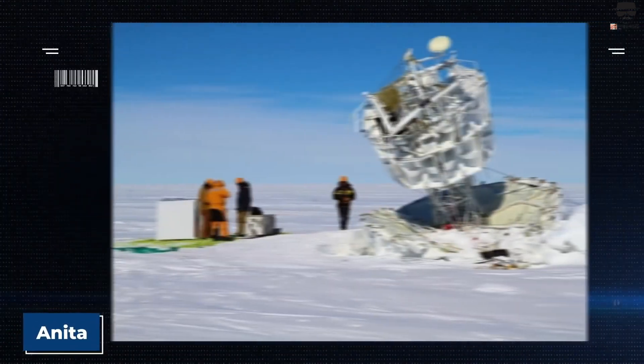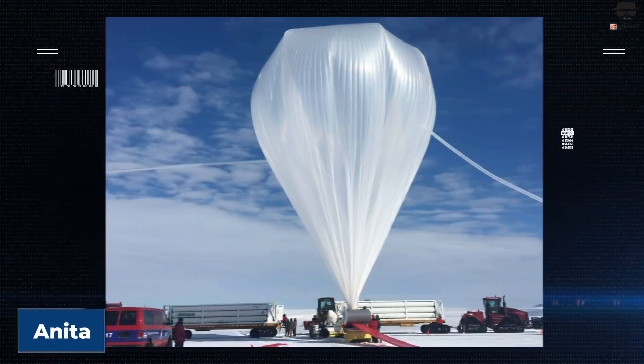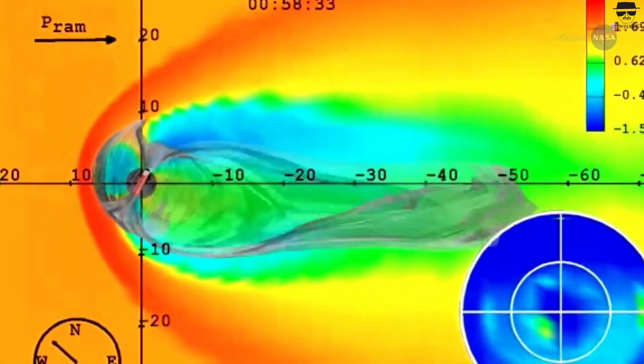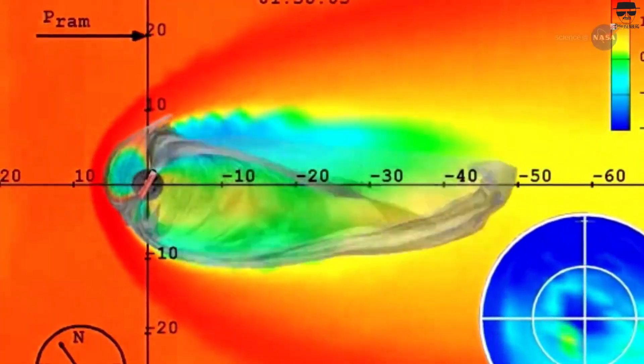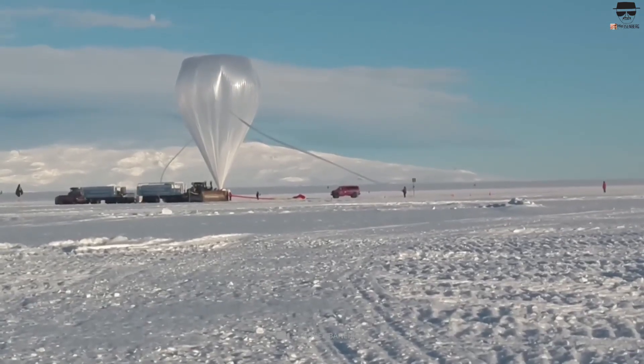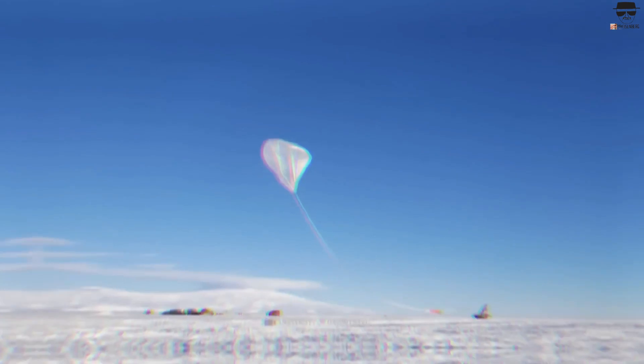The ANITA, Antarctic Impulsive Transient Antenna, experiment, a balloon-borne experiment that's sensitive to radio waves, detected radio waves of a particular set of energies and directions coming from beneath the Antarctic ice. This is good, it's what the experiment was designed to do.